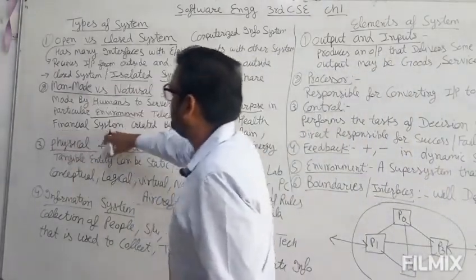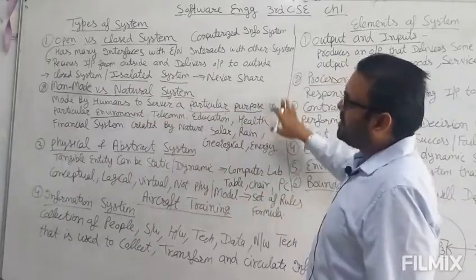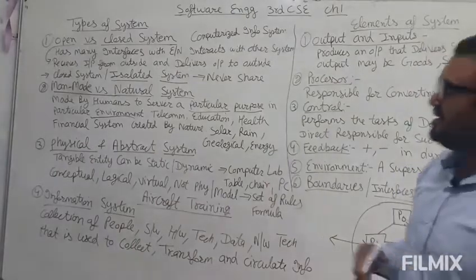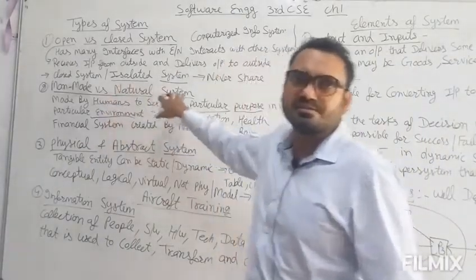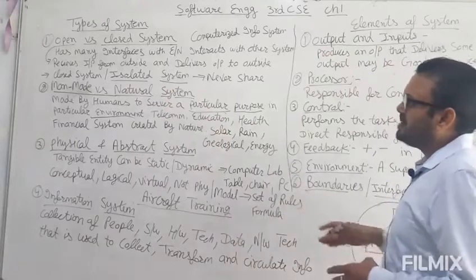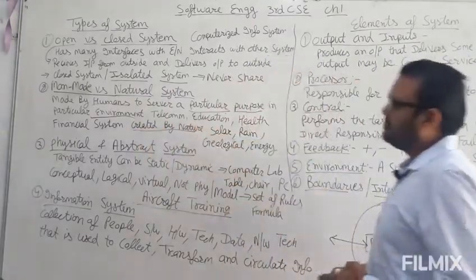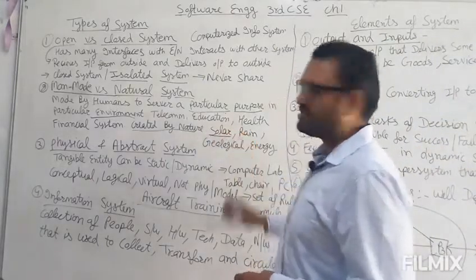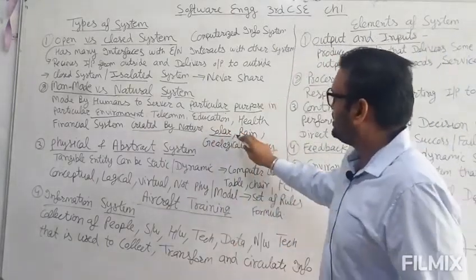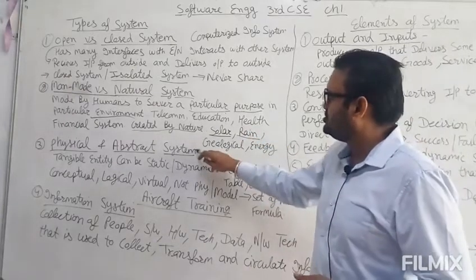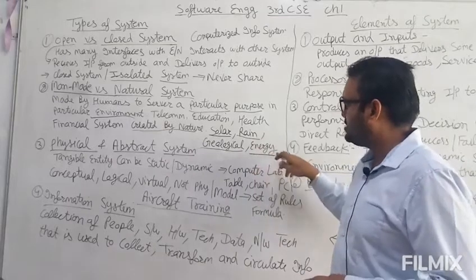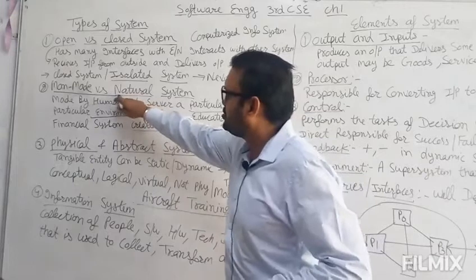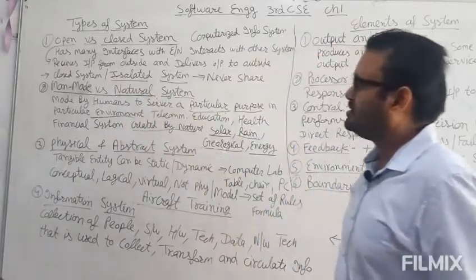These systems are made by humans and are called man-made systems. The second category is natural system — a system made by nature. For example, we have a solar system, a rain system, a geological system, or an energy system. These are natural systems.